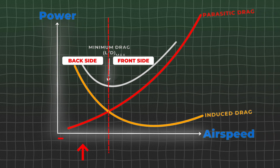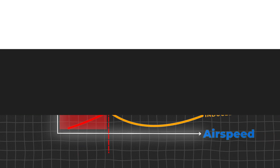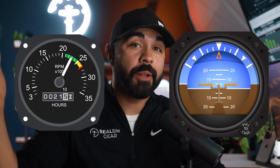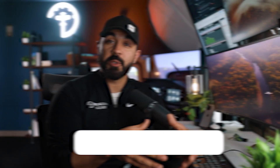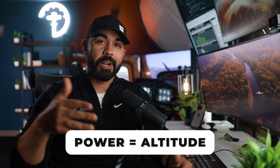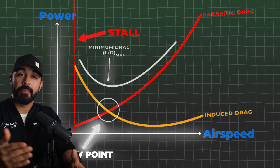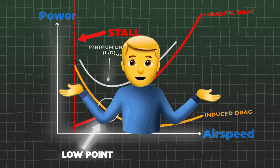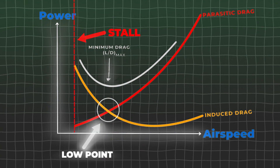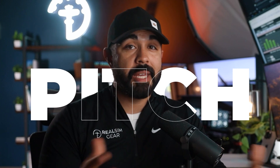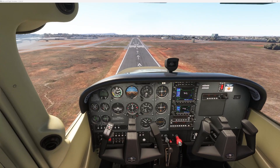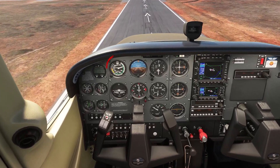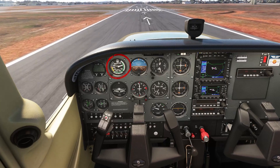On the back side of the power curve, meaning when we're slower than best glide, we're in what's called the region of reverse command. Instead of using power to control speed or pitch to control altitude, we do the reverse — we use pitch for airspeed and power for altitude. So if I'm a little slow, getting close to the aerodynamic stall line, what gives me the most control and immediate response over airspeed? That's pitch. If I lower my nose so I'm no longer fighting gravity, that will immediately increase my airspeed and keep my wings flying.